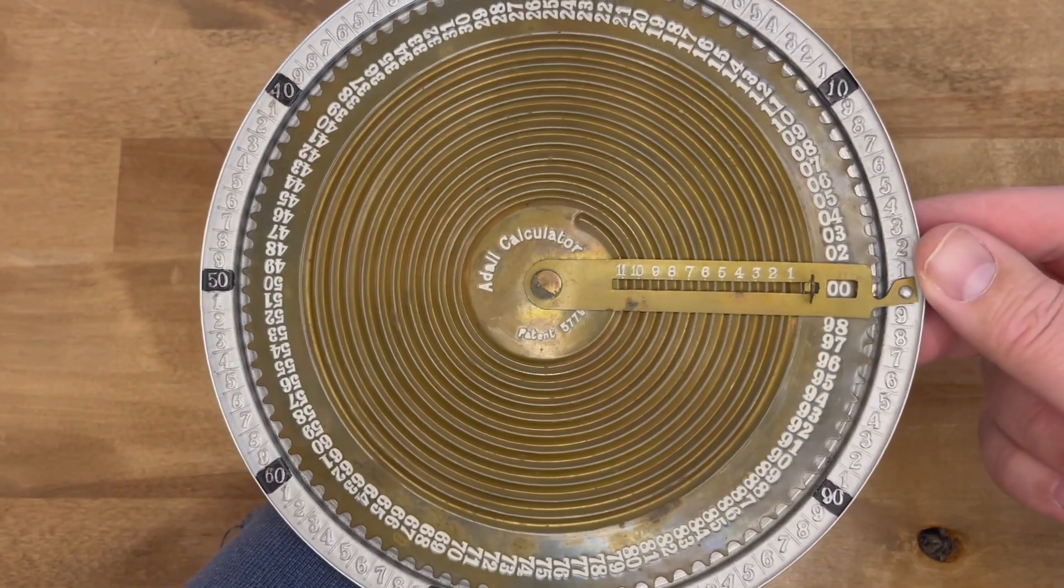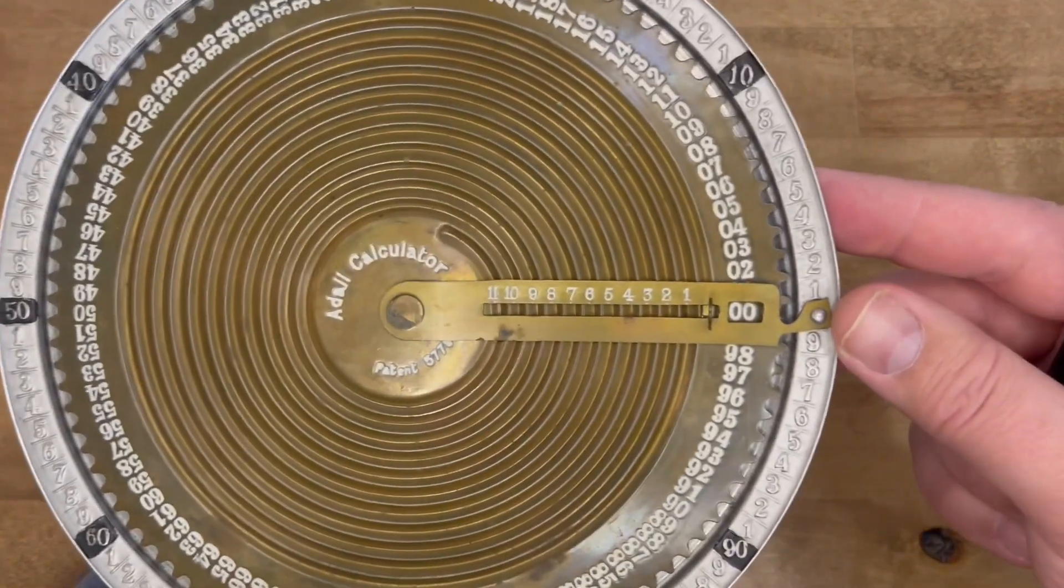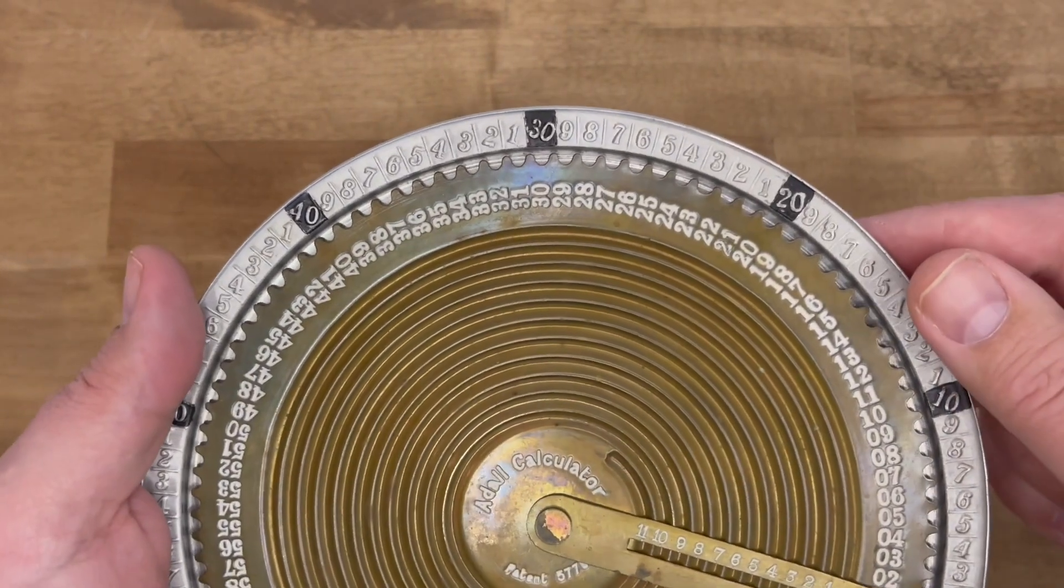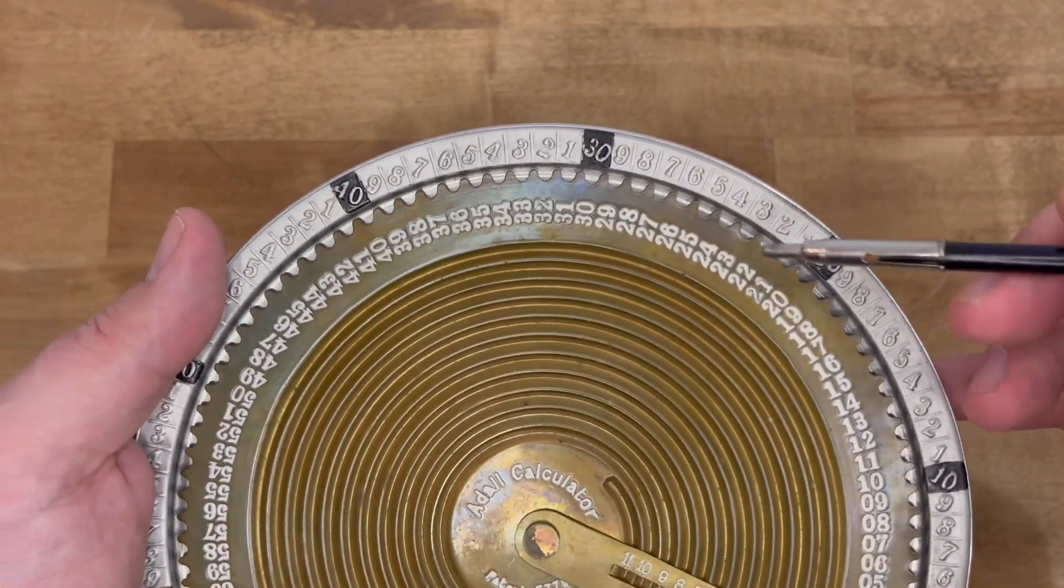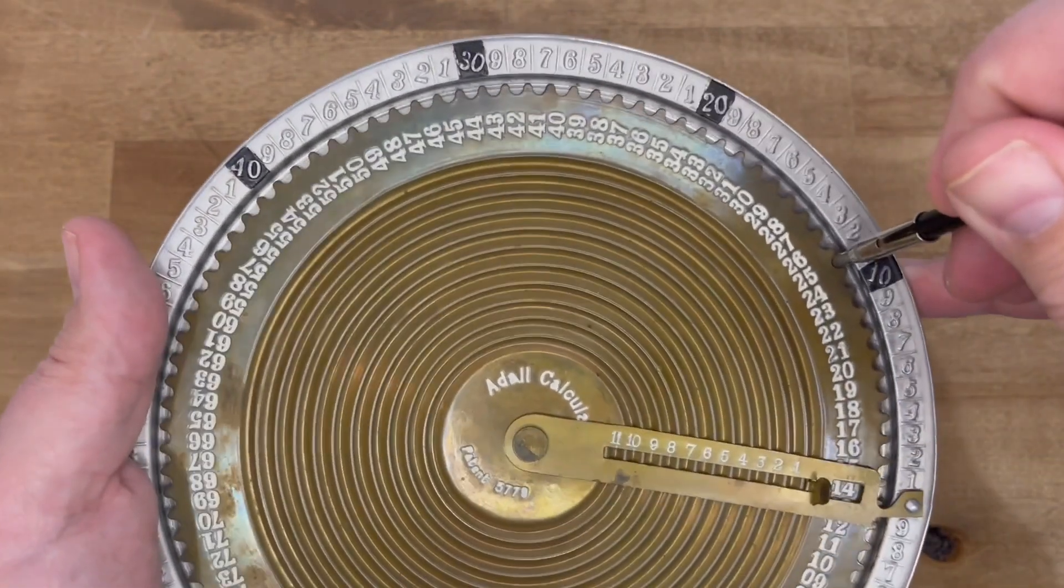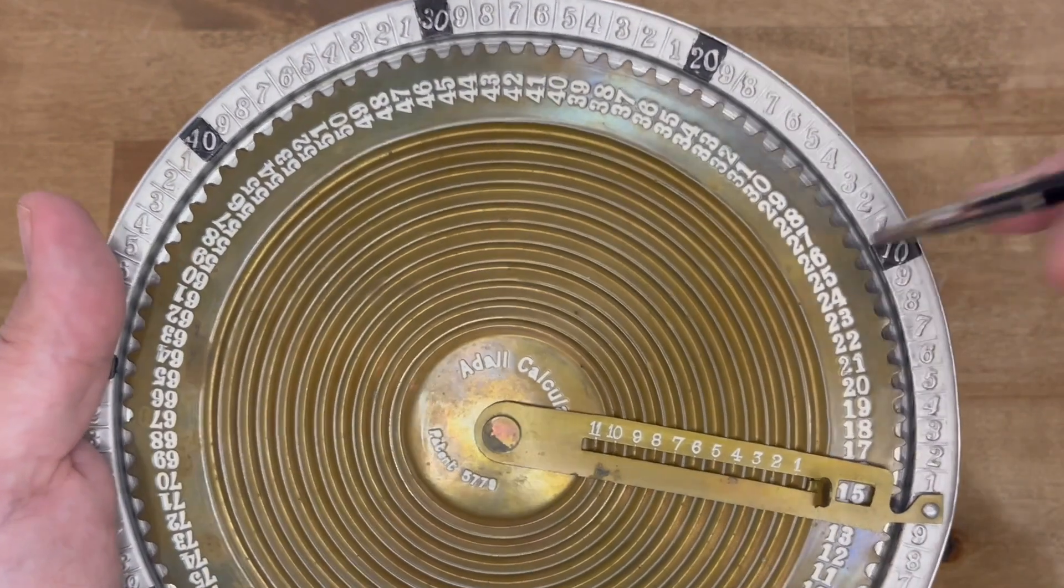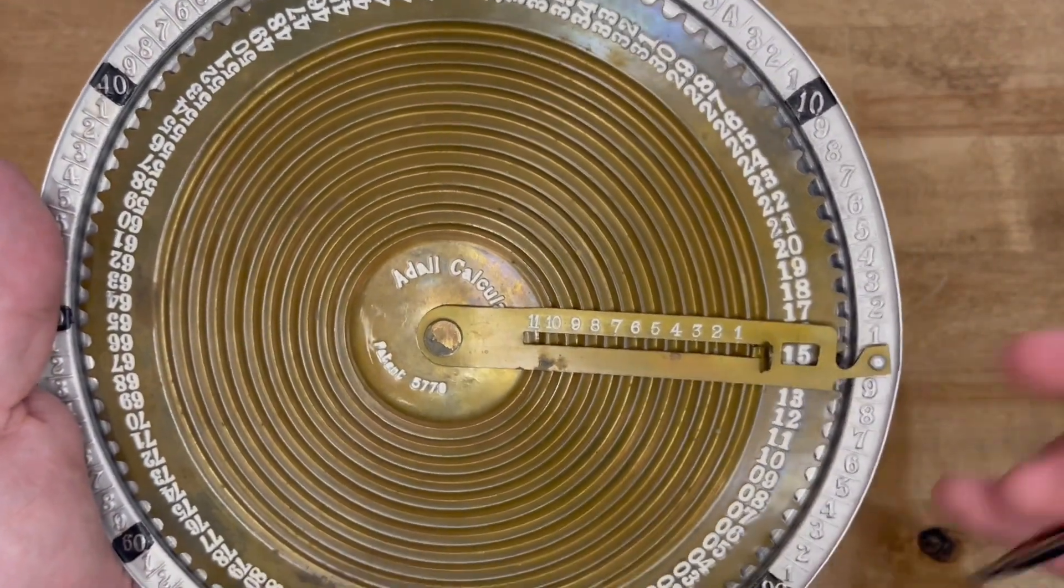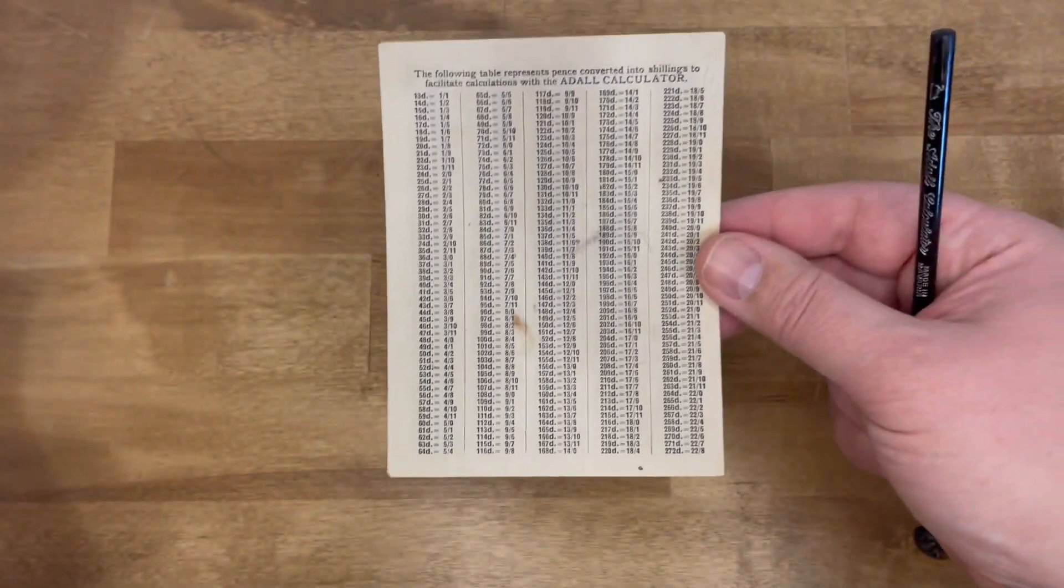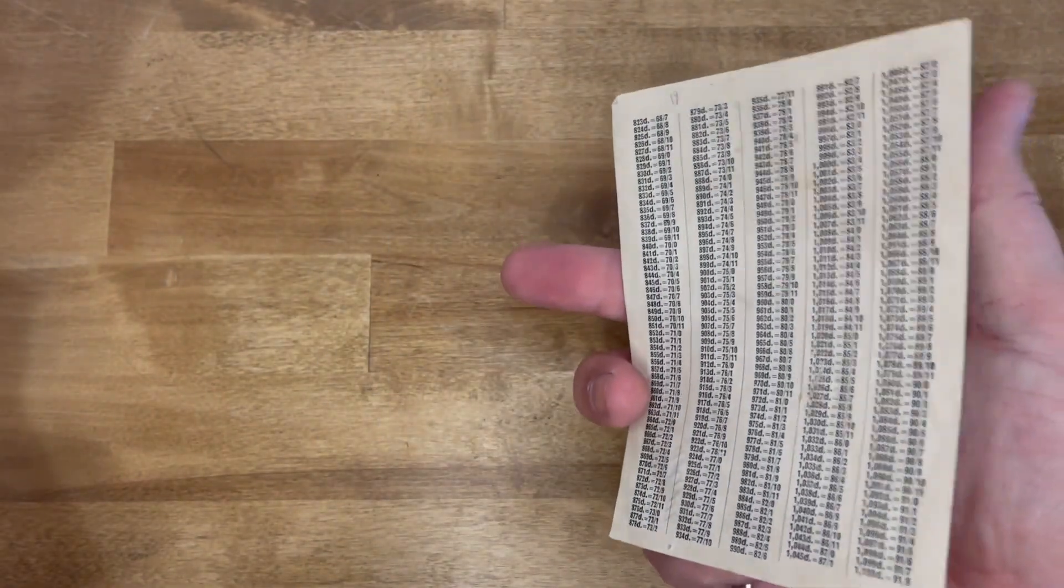Subtraction was not accomplished by moving it in reverse, instead you take the big number on the middle ring. If I want to go 25 minus 10, I move it to the 10 and then 15 shows up as the answer. So this works great, but under Britain's LSD currency, the Adol started to flounder a bit.